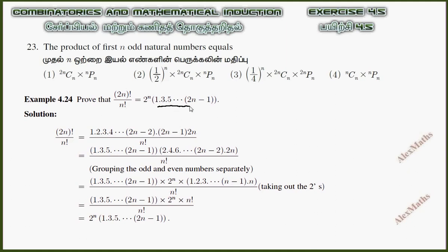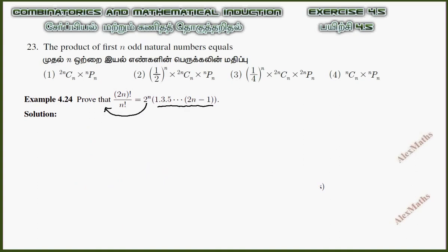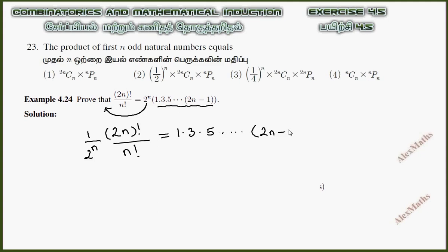This term is the product of n odd natural numbers. The answer involves 2 to the power n in the denominator. So 1 divided by 2^n times (2n)! divided by n! gives us 1 × 3 × 5 × ... × (2n − 1).